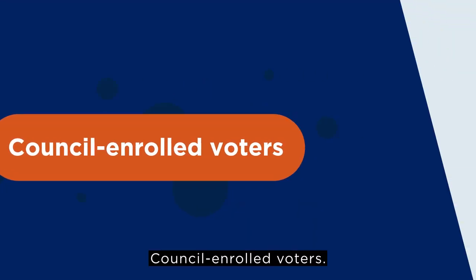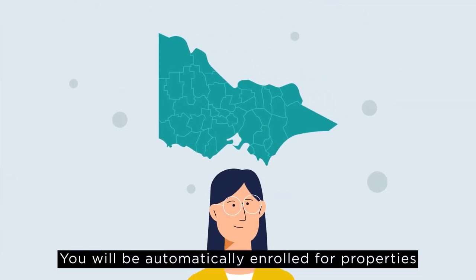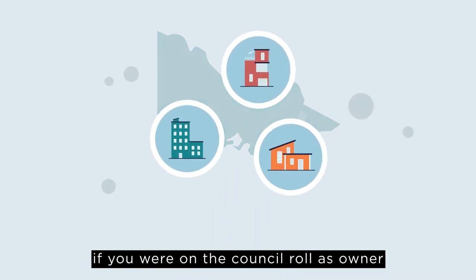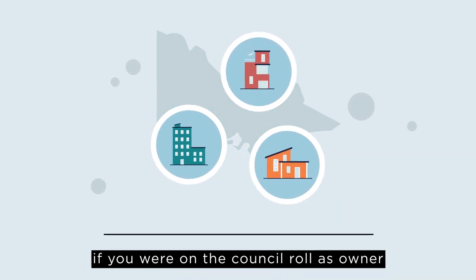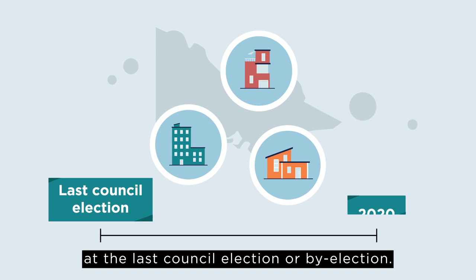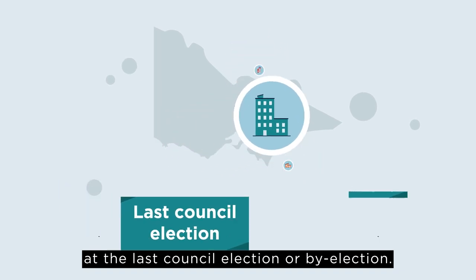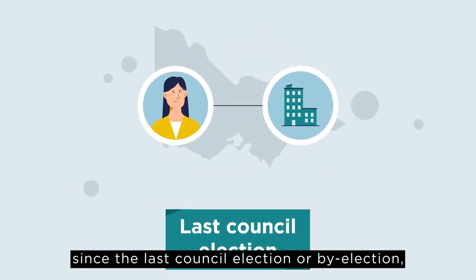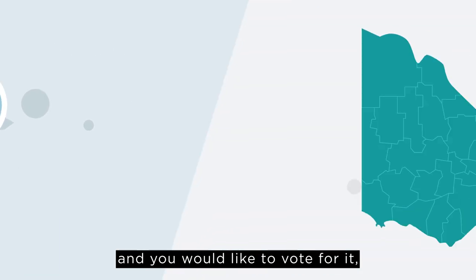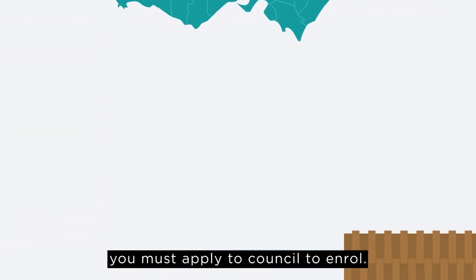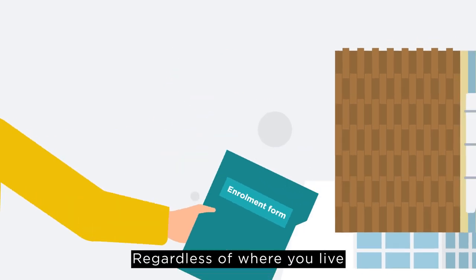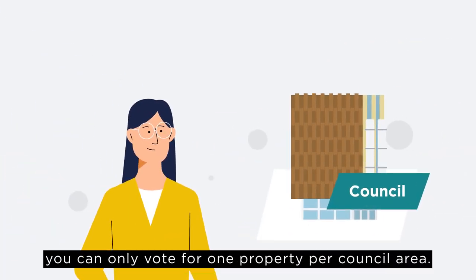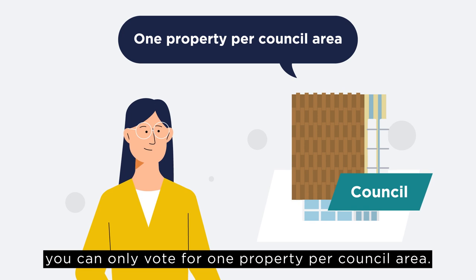Council Enrolled Voters: You will be automatically enrolled for properties you may own in other local council areas if you are on the Council Roll as owner at the last council election or by-election. If you have bought a property in another council area since the last council election or by-election and would like to vote for it, you must apply to council to enrol. Regardless of where you live and how many properties you own, you can only vote for one property per council area.